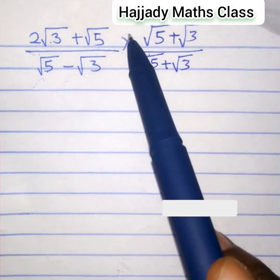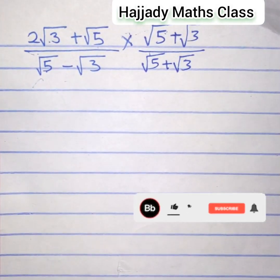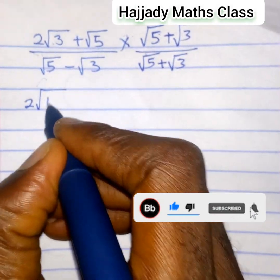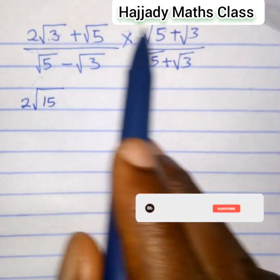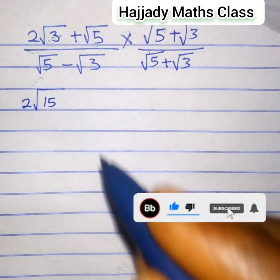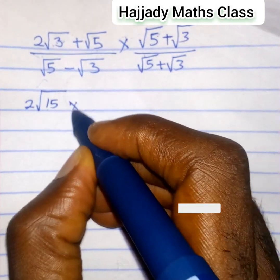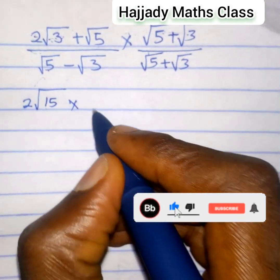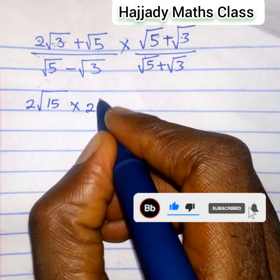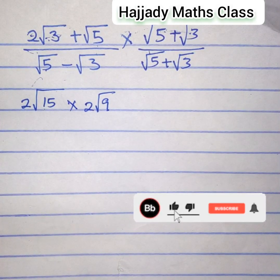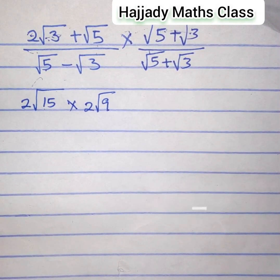We have 2 root 3 times root 5. This gives us 2 root 15. You can multiply the values in the surd together, which is 3 times 5, which is root 15. We proceed by saying 2 root 3 times root 3, this gives 2 root 9. Although there is a method that says root A times root A gives A, but let's proceed using this approach.